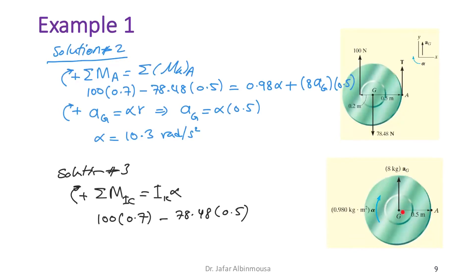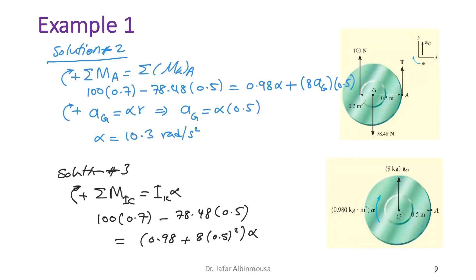Using the parallel axis theorem: I_IC = I_G + m·d² = 0.98 + 8 × (0.5)².